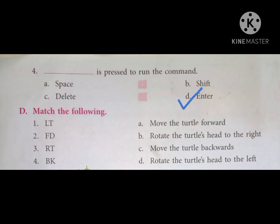Question D: Match the following. Number one is LT, which is left command, which will go with number D: Rotate the turtle's head to the left. Then number two, FD, which is forward command, so it will go with number A: Move the turtle forward. Number three, RT, which is right command, and it will go with number B: Rotate the turtle's head to the right. And the last one is BK, which is back command, so it will go with C: Move the turtle backwards.